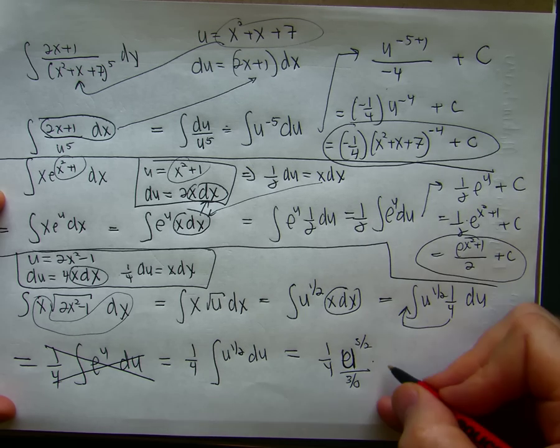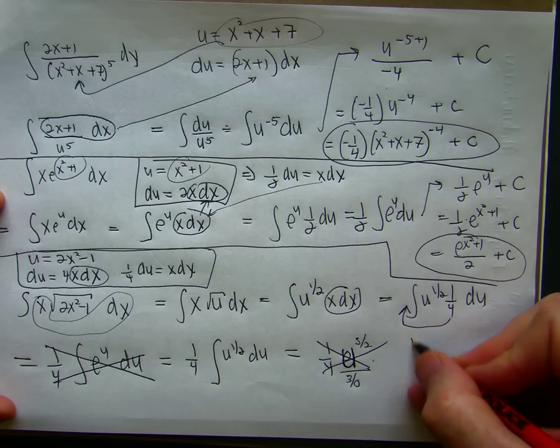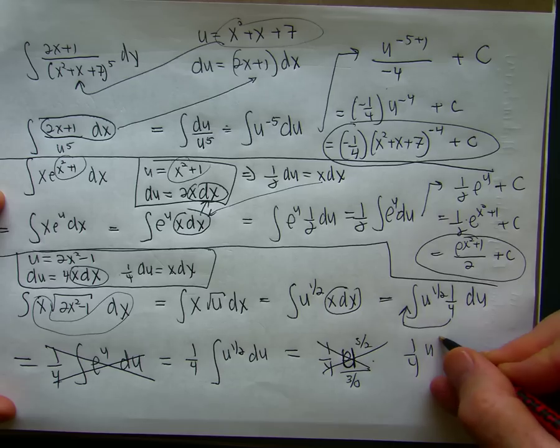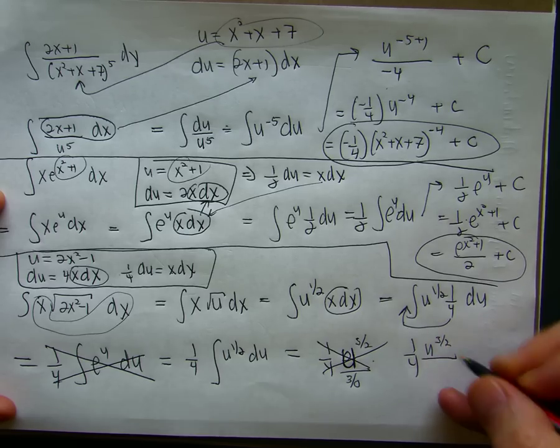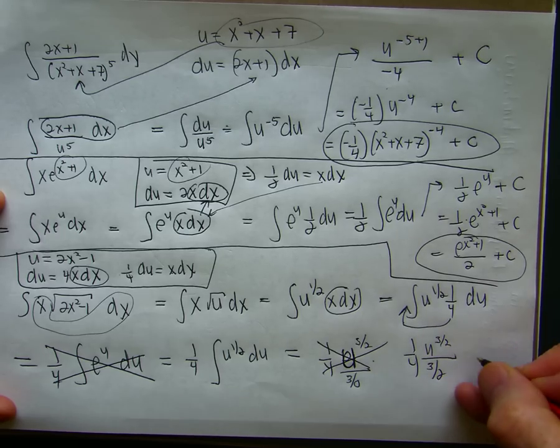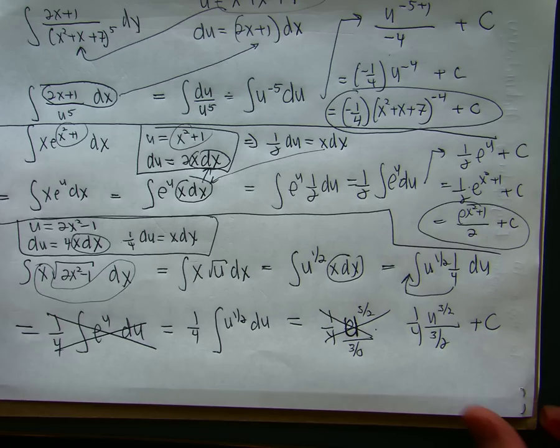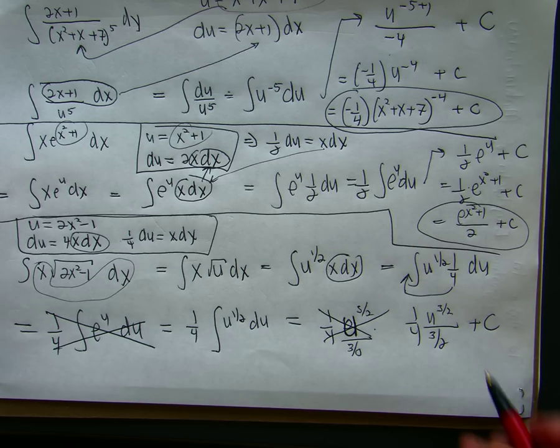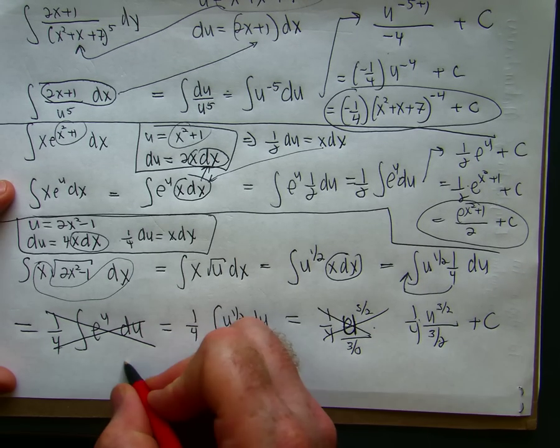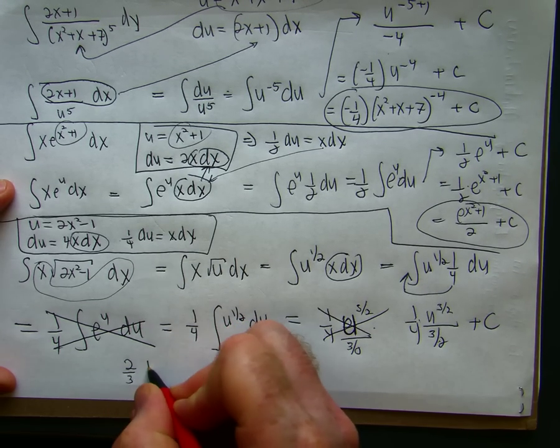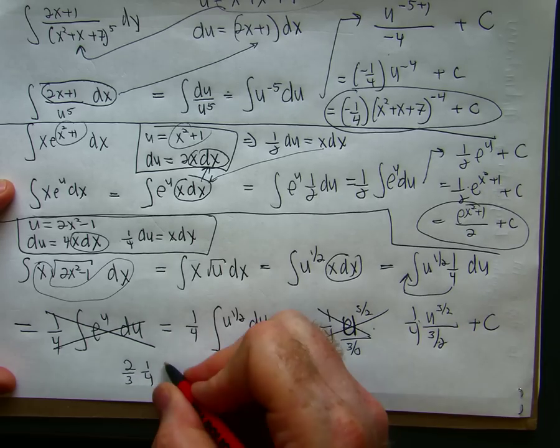Sorry for those errors. Okay. Now we're ready. So, cross multiply. 2 thirds. 1 quarter. u to the 3 halves.